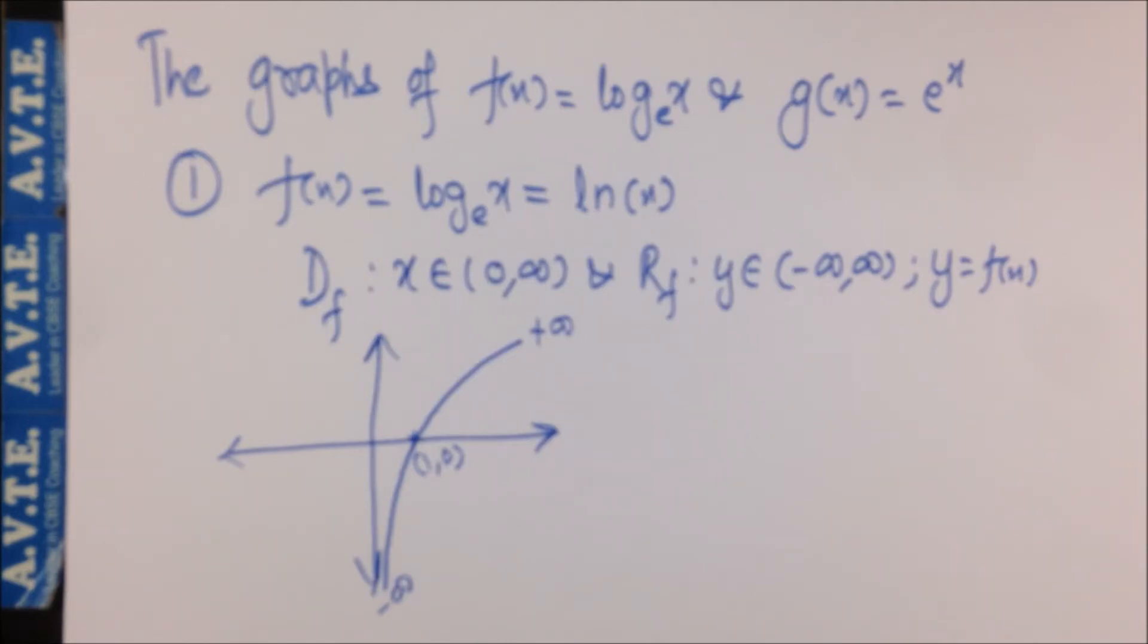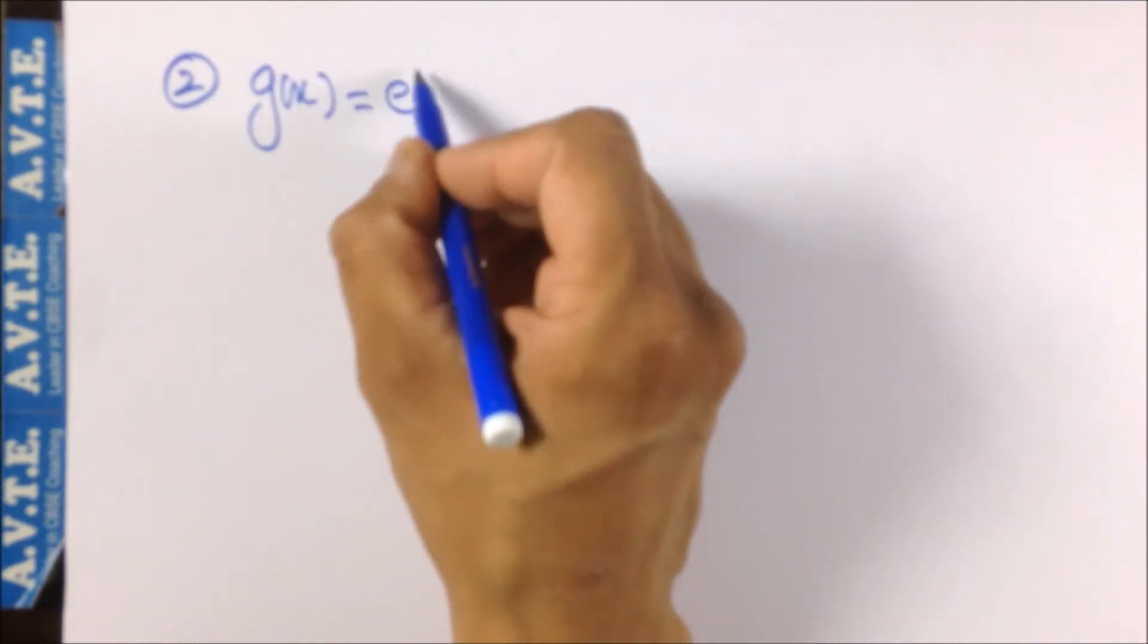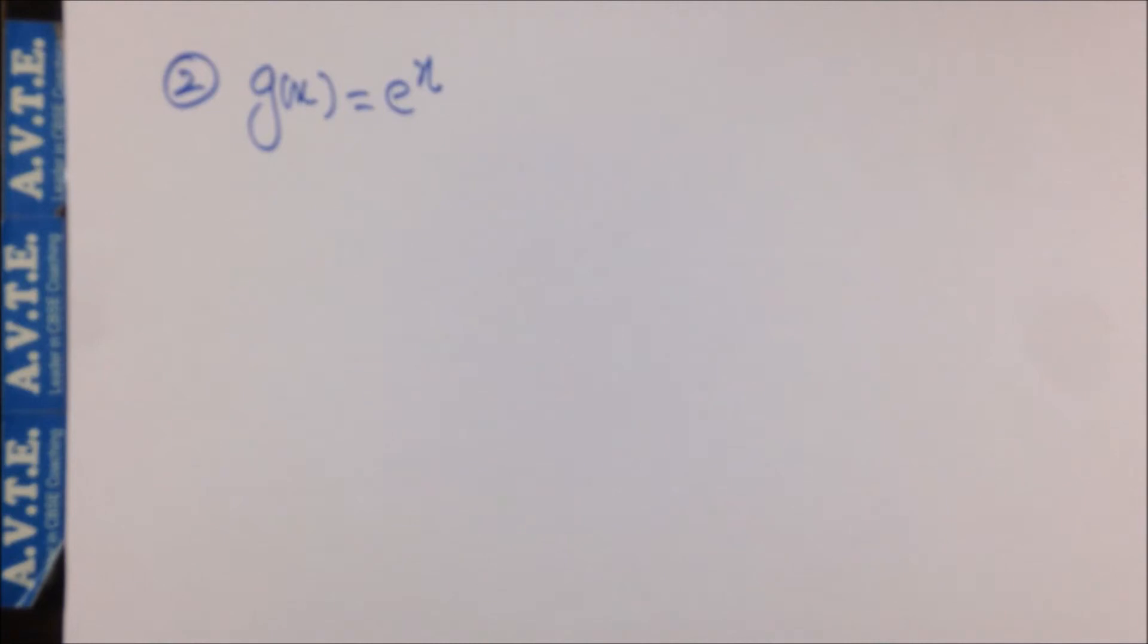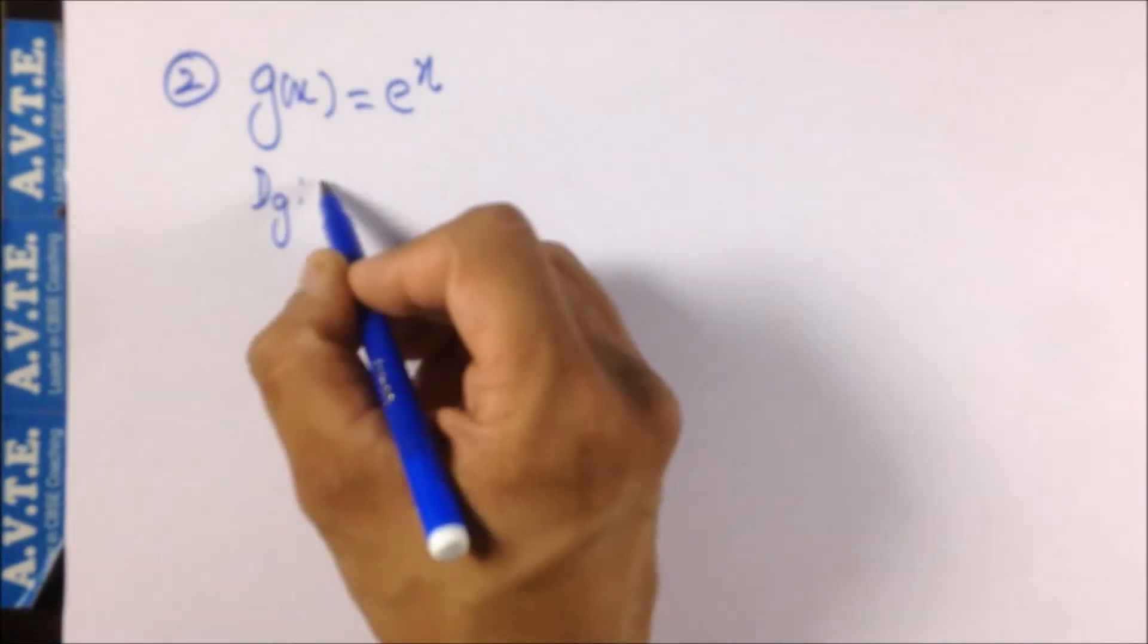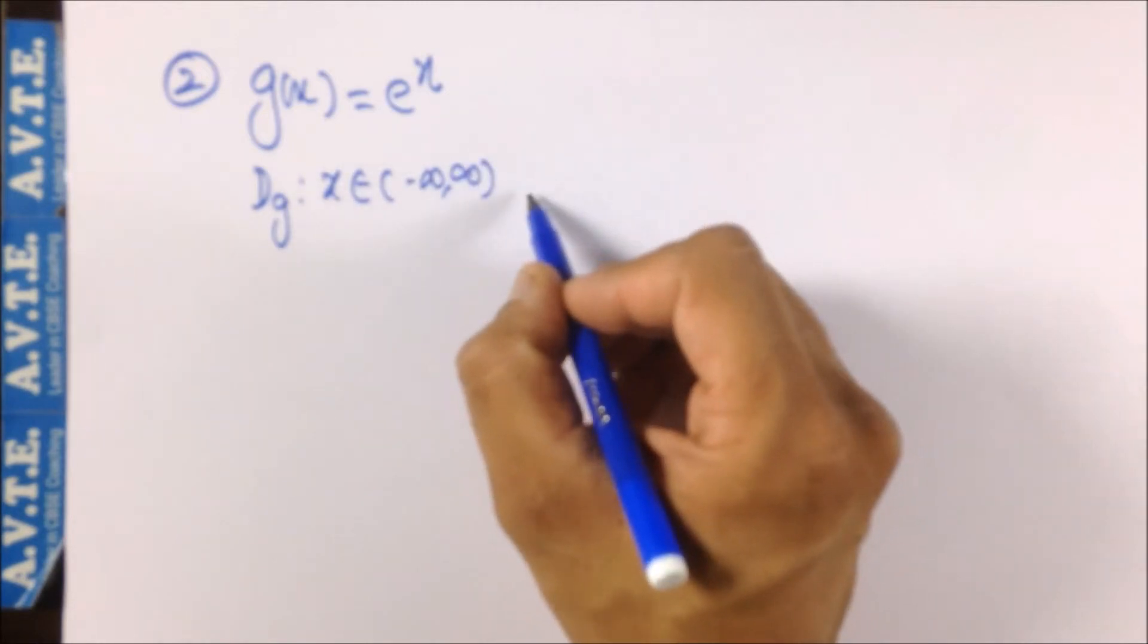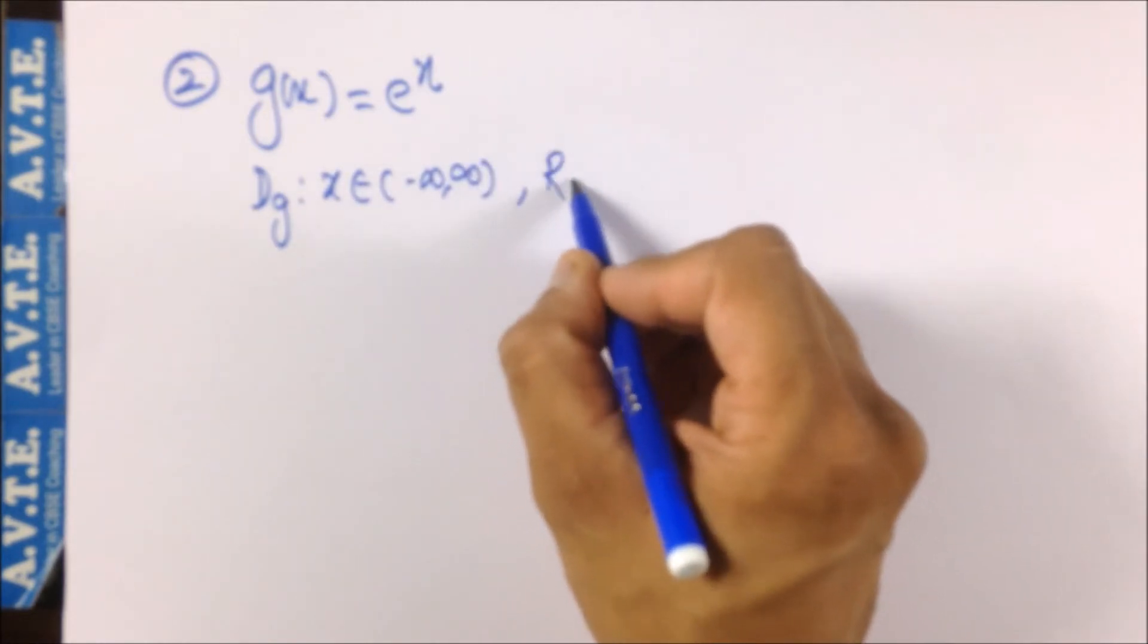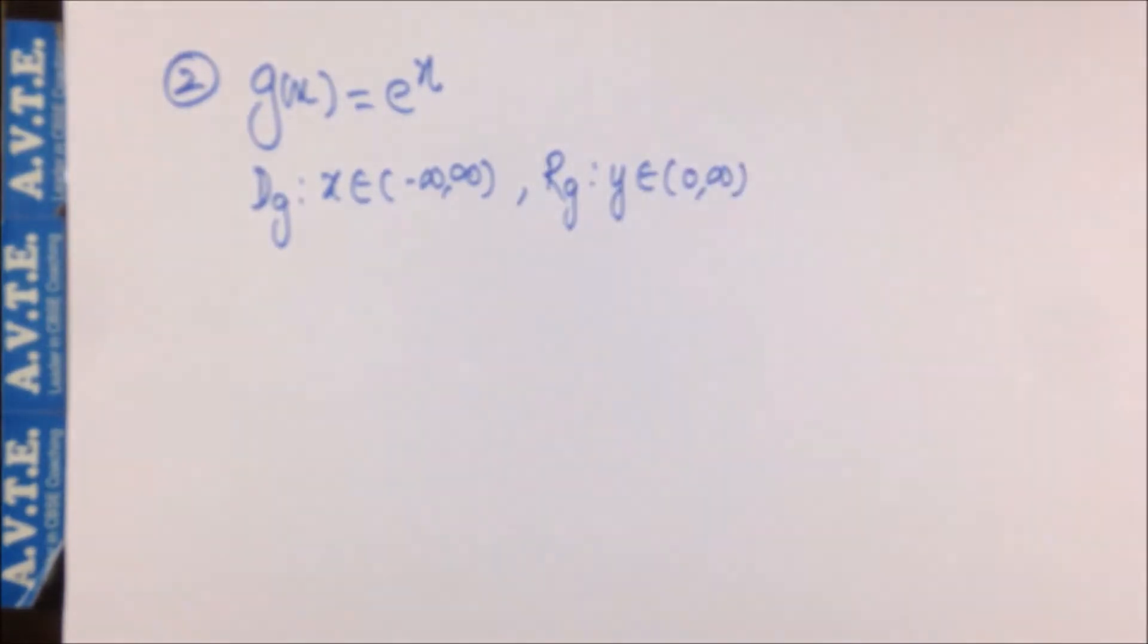Now I'll take you to e^x. This is e to the power x, it is also known as exponential function. The domain of this function is all the real numbers and the range of this function is the set of positive values, just the opposite of log x base e.